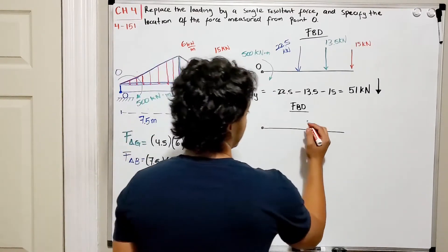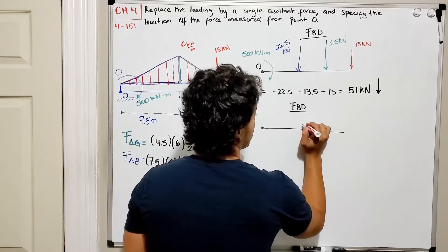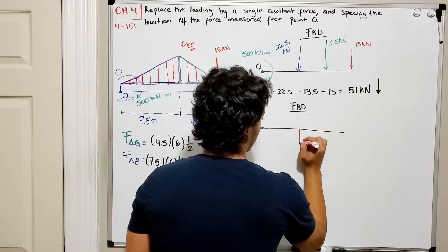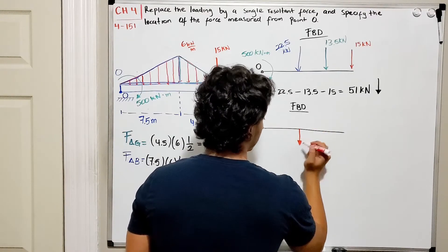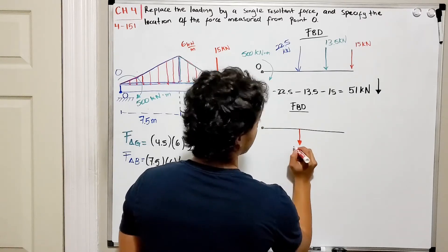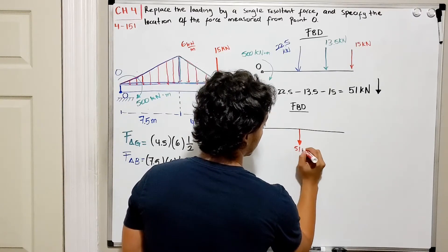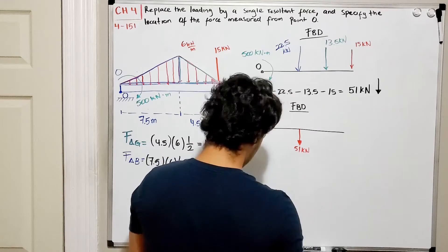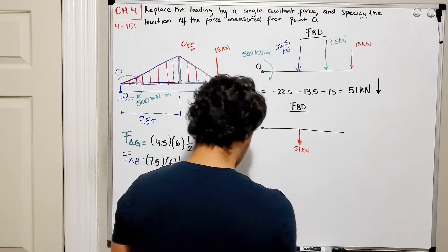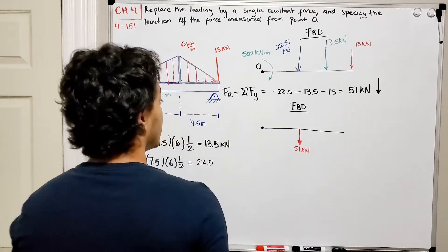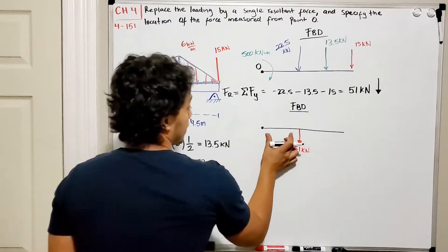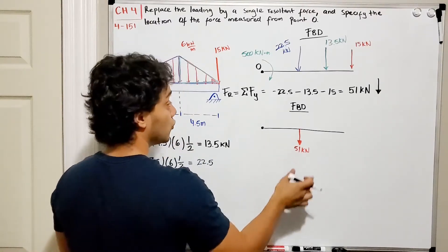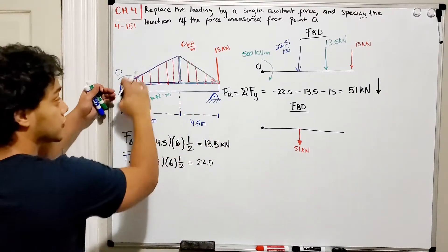Our resultant force will be acting somewhere in a place where we don't know it yet, but we need to find that out. This one over here is equal to 51 kN. So how do we find that out?